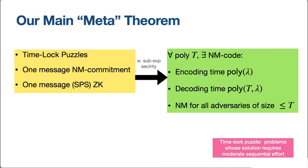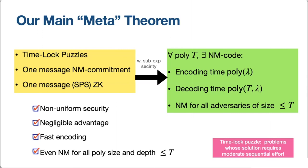This really achieves the holy grail. We achieve non-uniform security, negligible advantage, fast encoding, and even non-malleability for a larger class of adversaries. Because we use time-lock puzzles, we actually get non-malleability for all polynomial-size adversaries as long as their depth is a priori bounded. You only need to bound the depth — the parallel run time — of the attacker, and we can support arbitrary polynomial-size attackers.